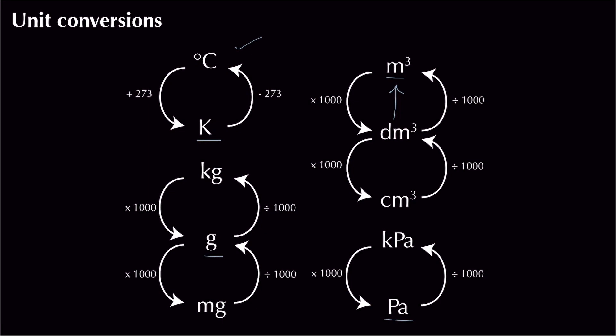If you look at temperature, that's the only unfamiliar one. We deal with temperature in Kelvin, and to convert from degrees Celsius to Kelvin, all we do is add 273. To go from Kelvin back to degrees Celsius, we subtract 273.